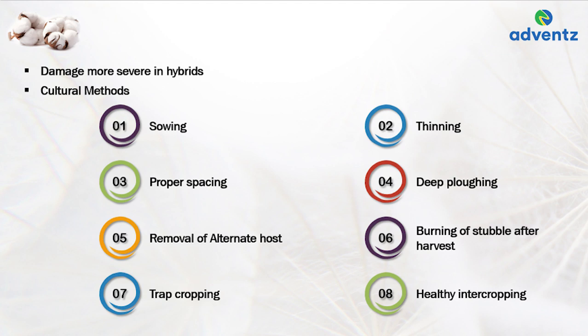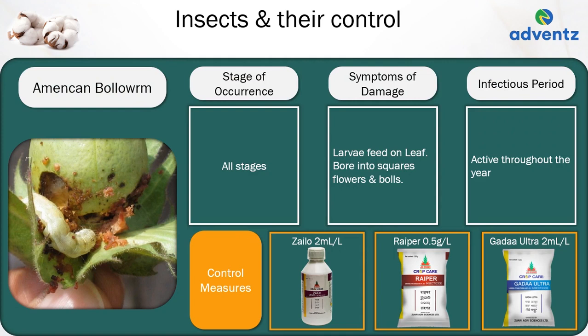Indiscriminate use of insecticides alone can only aggravate insect damage, leading to discontinuation of cotton cultivation itself. The first insect is the American bollworm. It can occur at all stages. The symptoms of damage are larvae feed on leaves, bore into squares, flowers and bolls. It is active throughout the year. Control: apply Zaleo at 2 ml per litre, or Jai Kisan Griper at 0.5 grams per litre, or Jai Kisan Gadda Ultra at 2 ml per litre.